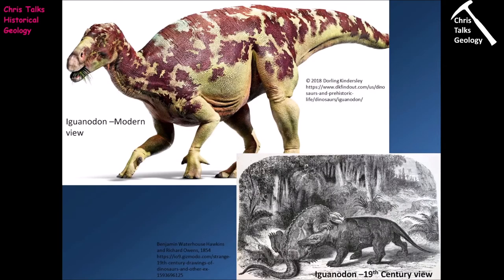We also know that Iguanodon was actually a herbivore. Yet the original Victorian illustration shows it with a horn on the nose and interpreted it as a crocodile-like predator. You can see over time how people applied their understanding of the reptile kingdom to dinosaur fossils, and how we've since begun to realise that initial interpretation was very, very wrong.